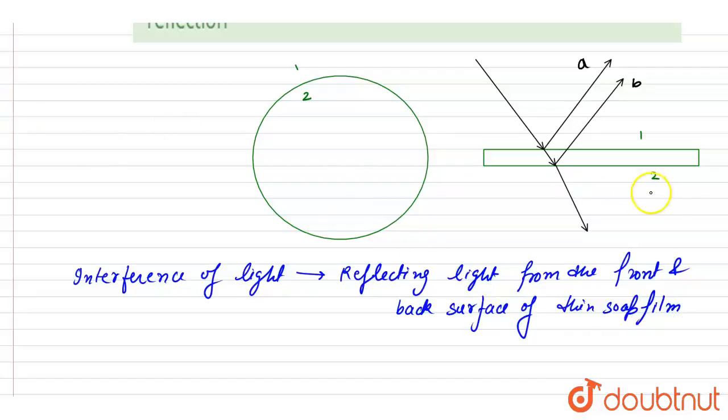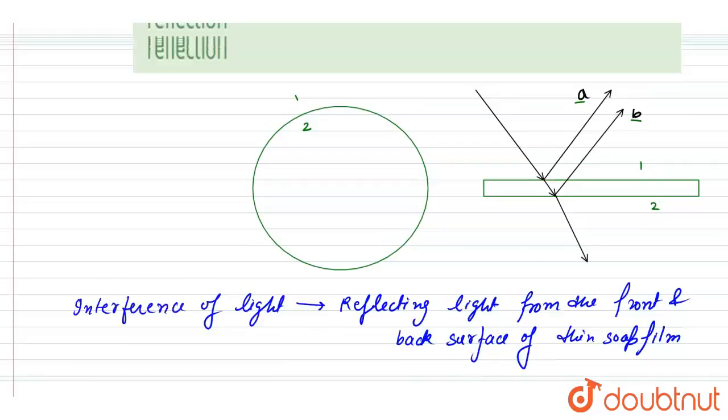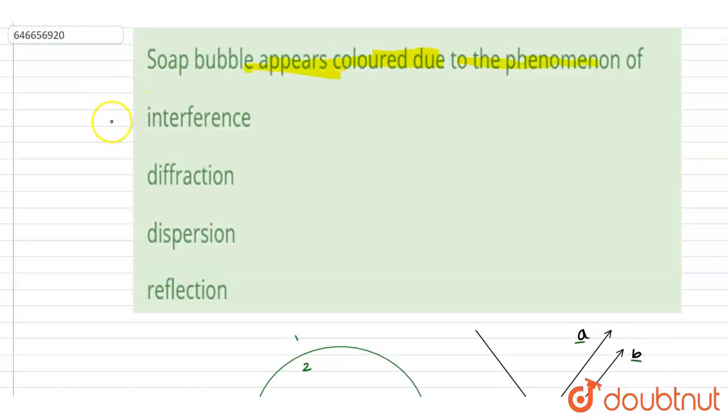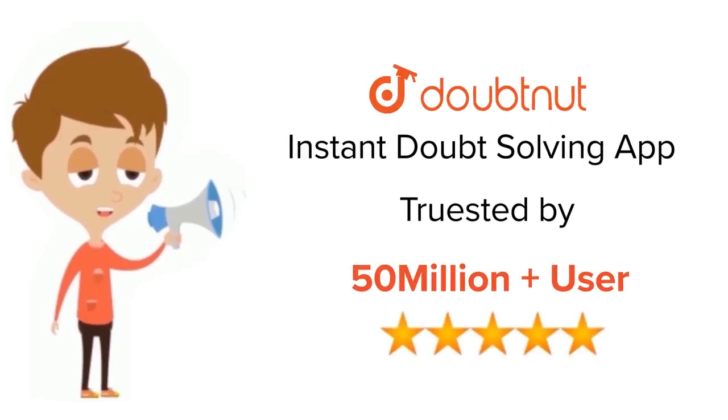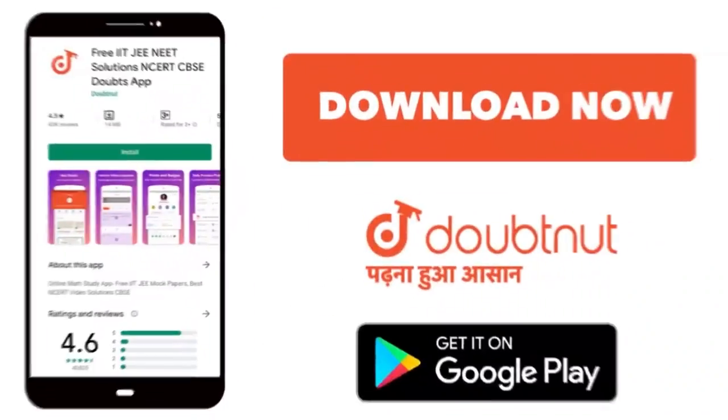So if you see here, the interference will take place because of the two reflected rays, and interference will occur. So now you can mark the correct option as A. Thank you. For class 6-12, IIT-JEE and NEET level, trusted by more than 5 crore students, download Doubtnet app today.